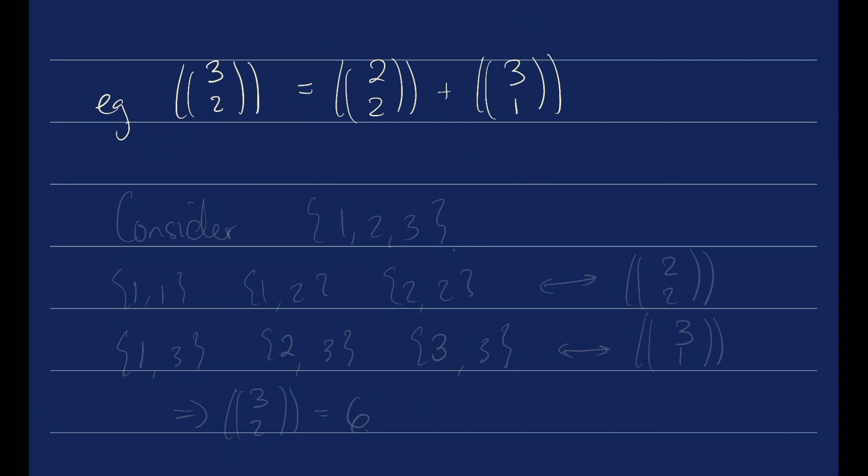Why would that be true? Well, let's consider our set of size 3 and let's talk about all of the multi-sets that only involve 1 and 2. So we get 1, 1, 1, 2, and 2, 2. This corresponds to 2 multi-choose 2.